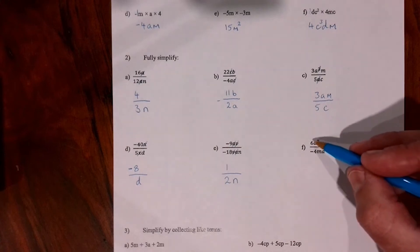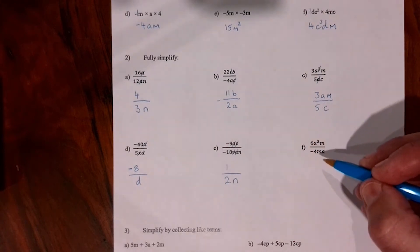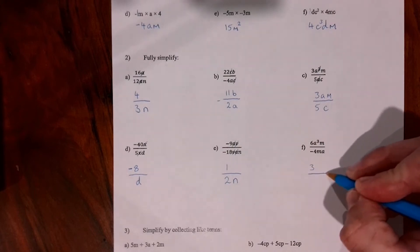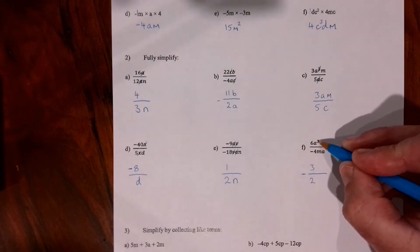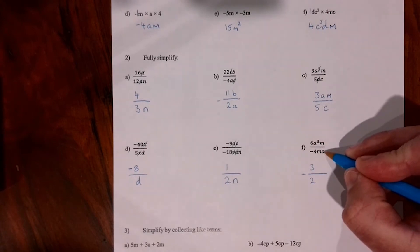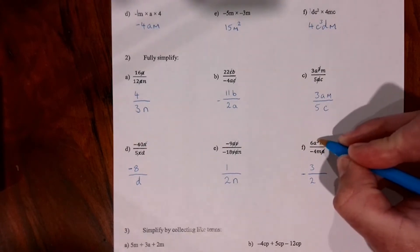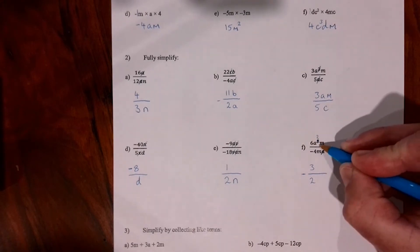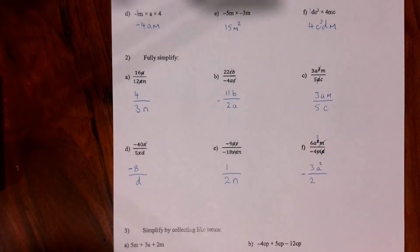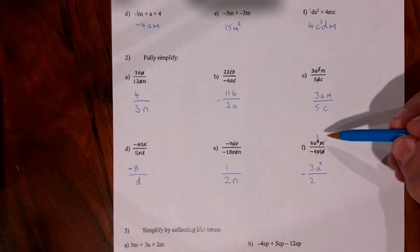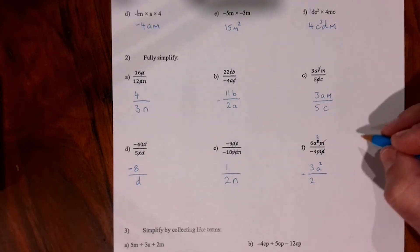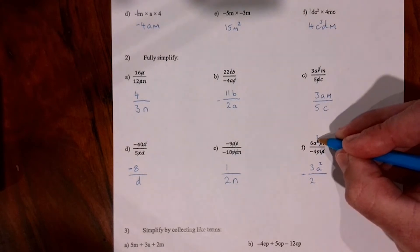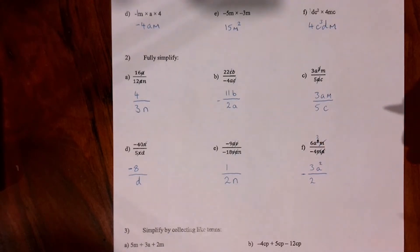Question 2f: 6 divided by minus 4. Since 2 goes into both numbers, it becomes negative 3 over 2. There's an a to the power of 3 on top and an a to the power of 1 on the bottom — the bottom a knocks out one of the top ones, leaving a squared. The m's eliminate each other as well. For anyone interested in index laws: when you divide indices, you subtract the exponents — so 3 minus 1 gives 2 — which you'll learn next year.